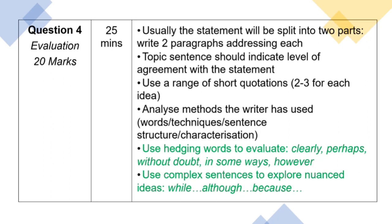'Clearly, the writer has done this. However, I disagree with this part of the statement because' — so you're evaluating and debating the truth of the statement. And then finally, use complex sentences to explore nuanced ideas: 'While I agree with this part because of this, I also partially disagree with this because of this. Although this part is true, I disagree with this part because of this.'